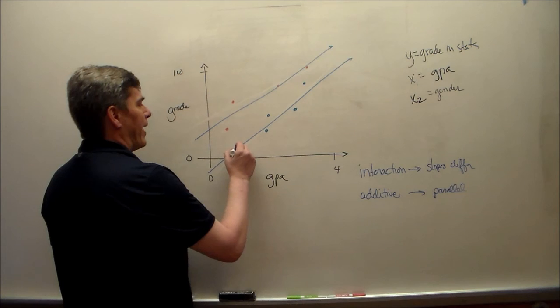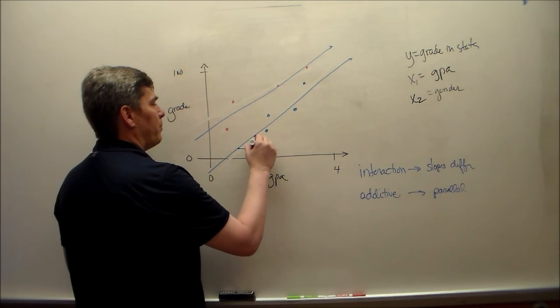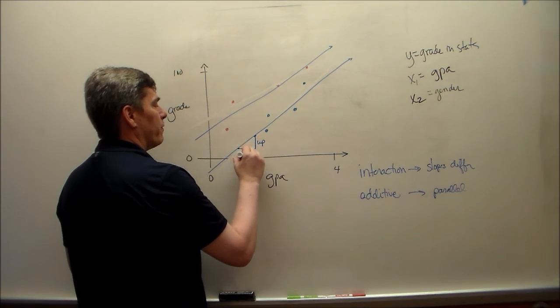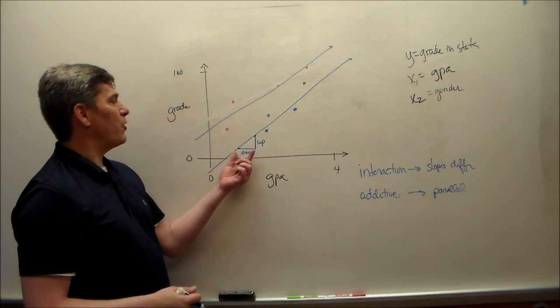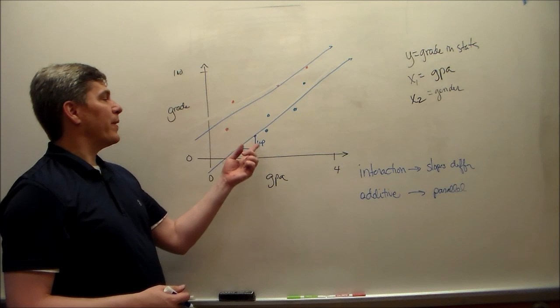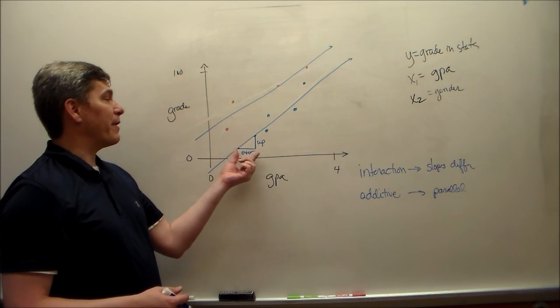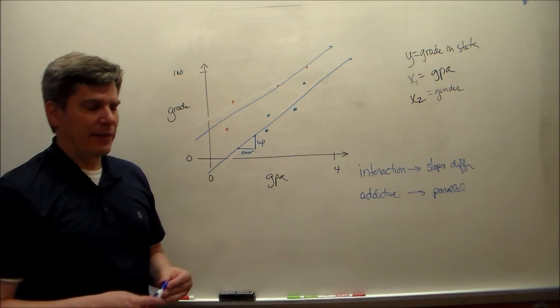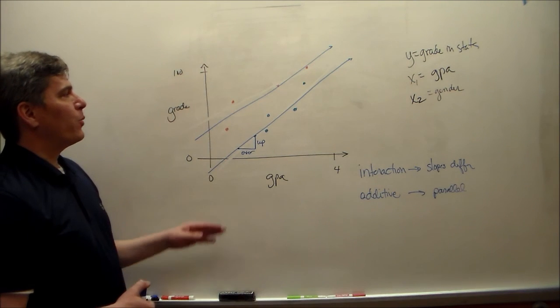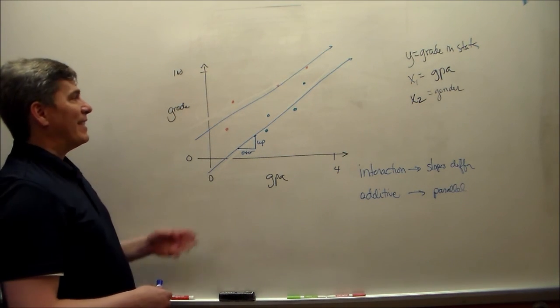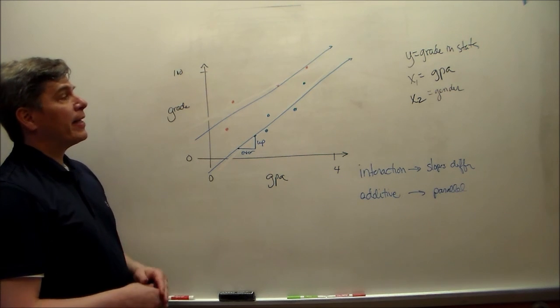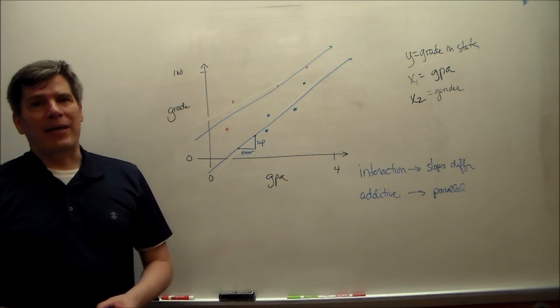And the slope again is how much up over how much over, or the rise over the run. The definition of the slope is the amount increase in the dependent variable for every one increase in the independent variable. Since we're fitting these with lines, the slopes are going to be constant. And again, if it is an additive model, the lines will be parallel. And if it's an interaction, they may not be.